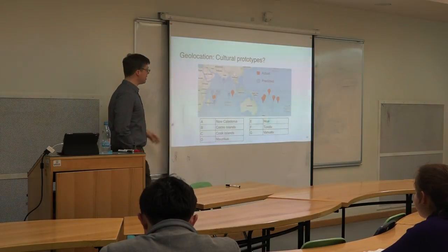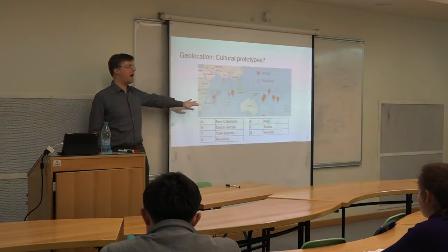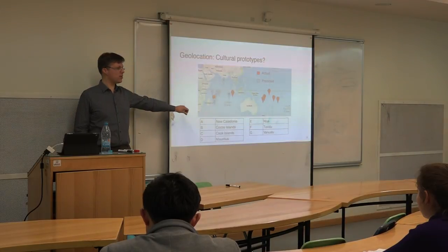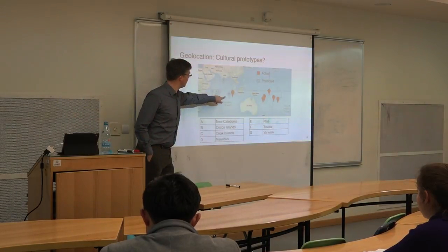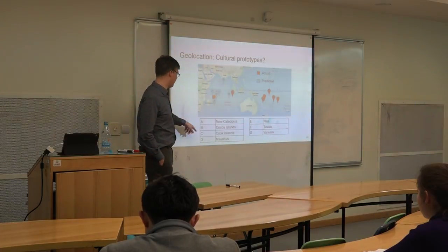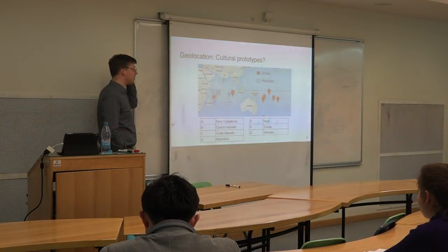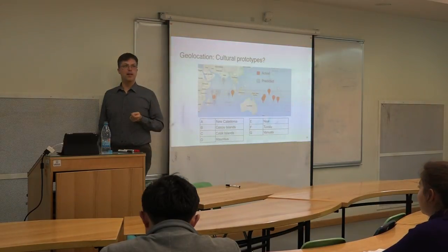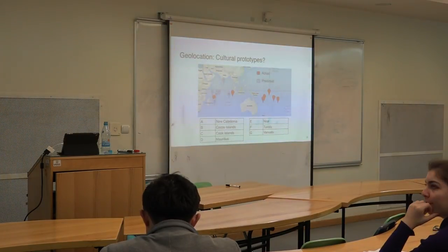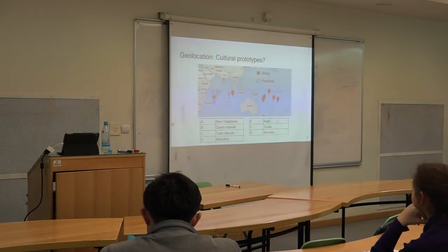Funnily enough, the model seems to do the same thing that people also do. People say 'I don't know — it's an island, and what other islands do I know? Maybe the Seychelles or Mauritius — so it's probably somewhere in the Indian Ocean.' And this is actually where all these guys are predicted. My argument loses a little coherence by the fact that Mauritius itself is predicted to be in India. What the model essentially ends up doing is it tries to predict these values from the distributional behavior, which means if two vectors are similar...